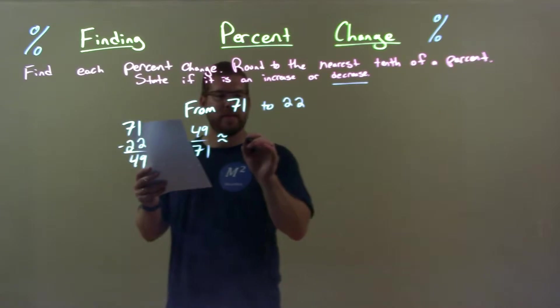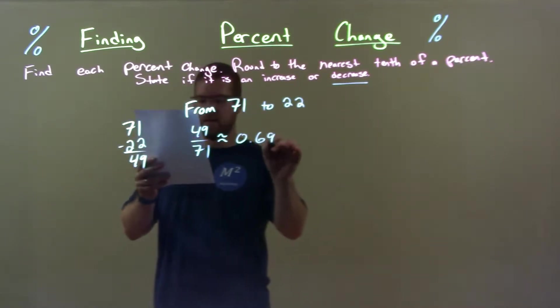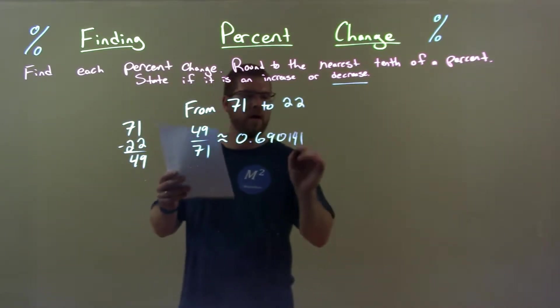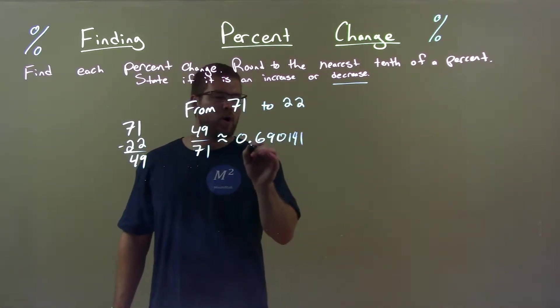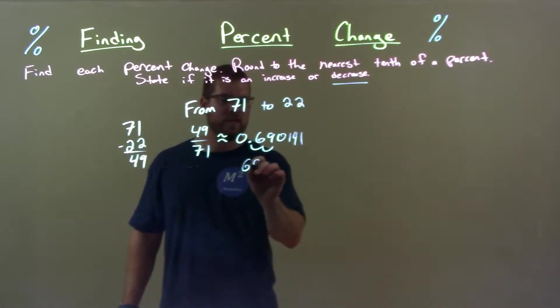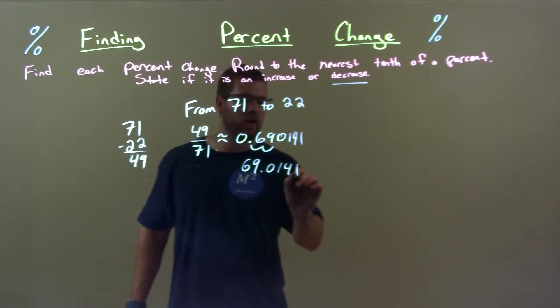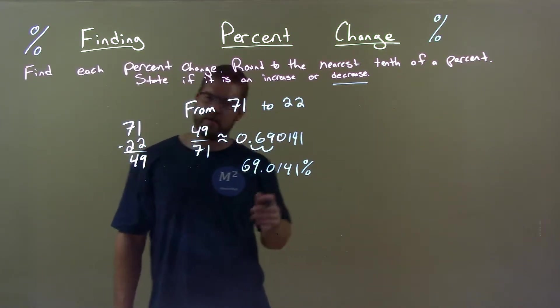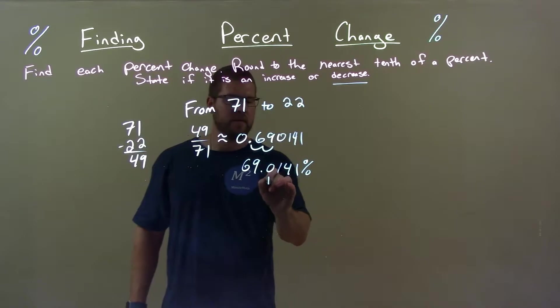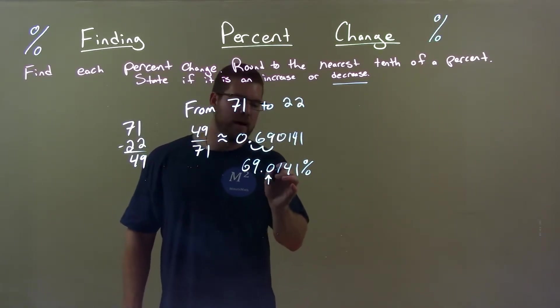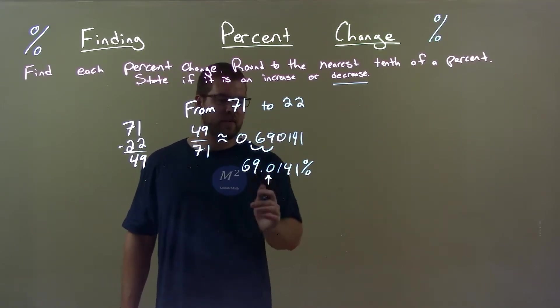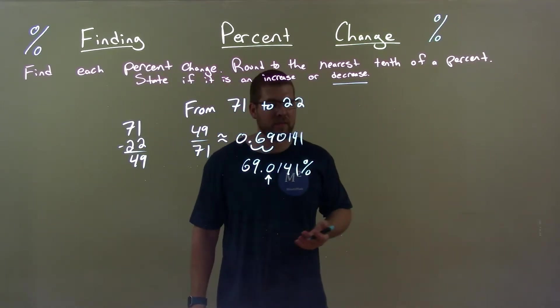Now, that comes out to be the decimal 0.690141. Convert that to a percent. Decimal point over two spots. 69.0141 percent. Got to round that to the nearest tenth right there. Look at the zero to its right, we got a one. One keeps a zero where it is. Zero stays where it is. We don't always need to write the zero.